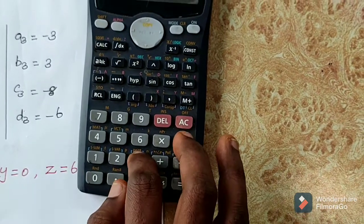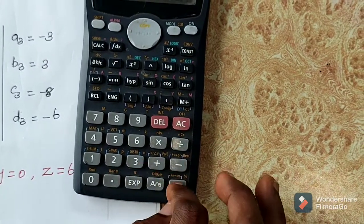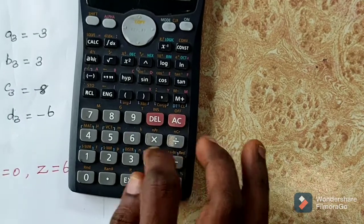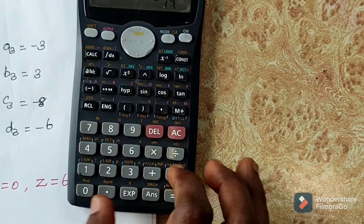A3 is minus 3, B3 is 3, C3 is minus 8, D3 is minus 6.